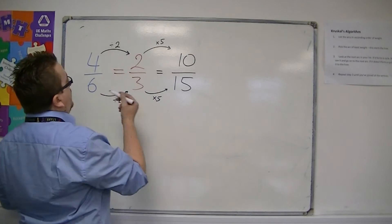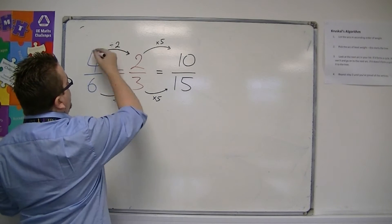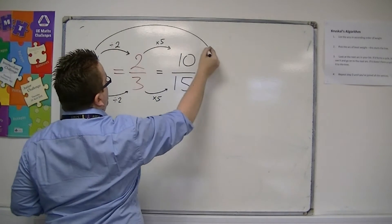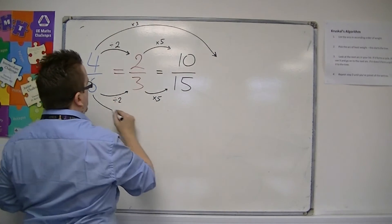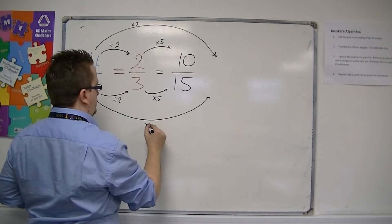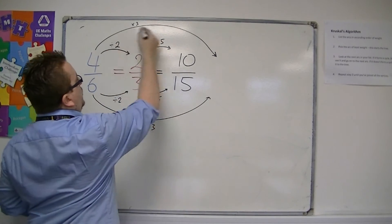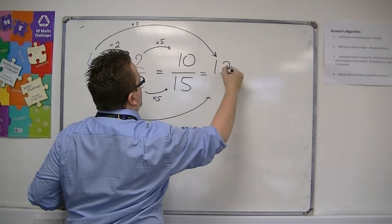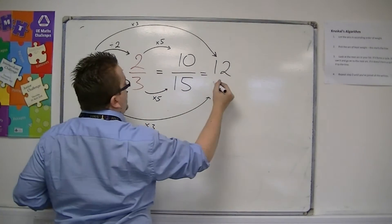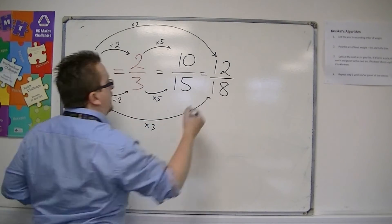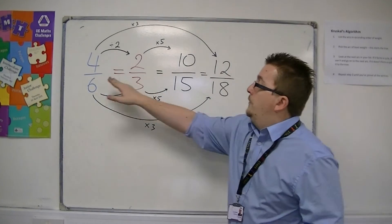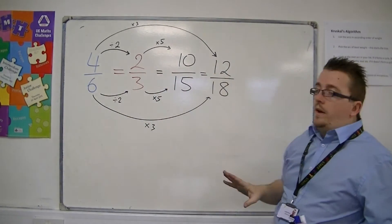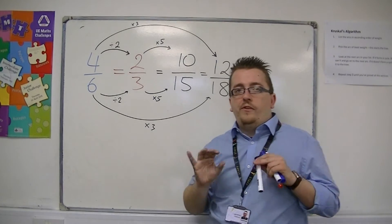I could multiply top and bottom of this fraction by 3. And so I would get 4 times 3 is 12, and 6 times 3 is 18. And so this is another equivalent fraction. All of these are equal to one another and represent the same area.